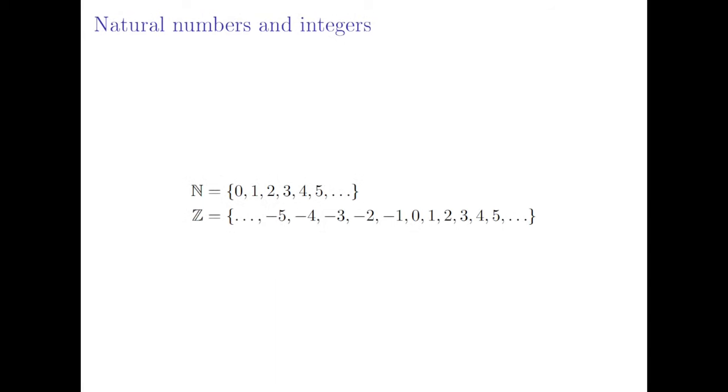So the natural numbers are our counting numbers, that's pretty simple: zero, one, two, three, four, five. The inclusion of zero is a bit controversial but otherwise this is very simple. The integers are our whole numbers, positive and negative and zero, so that's zero, negative one, negative two, negative three, negative four, negative five and so on, and one, two, three, four, five and so on. That's pretty simple.